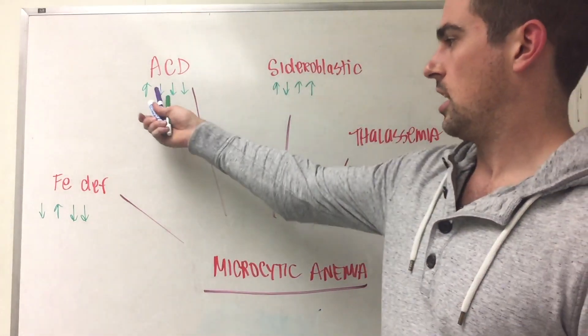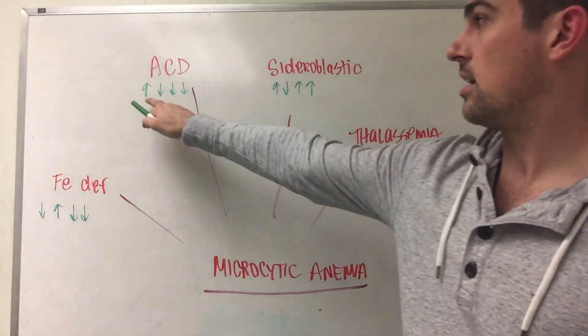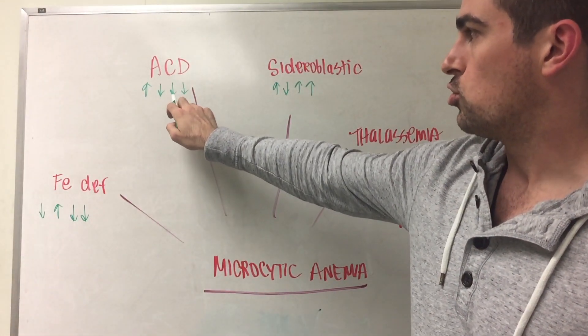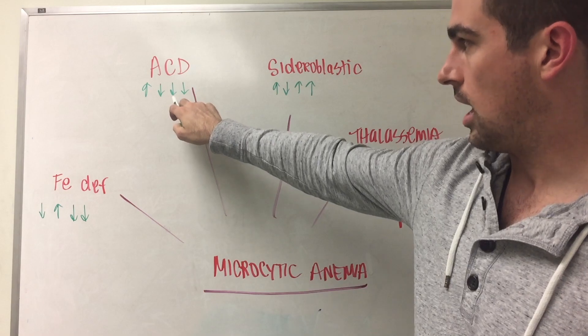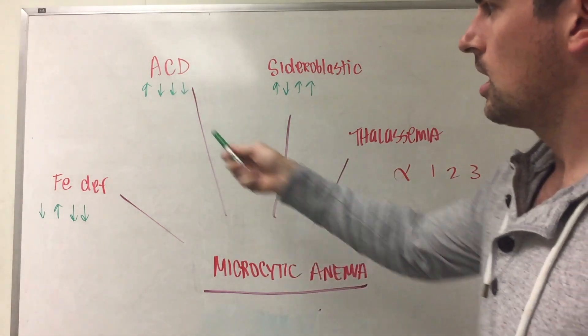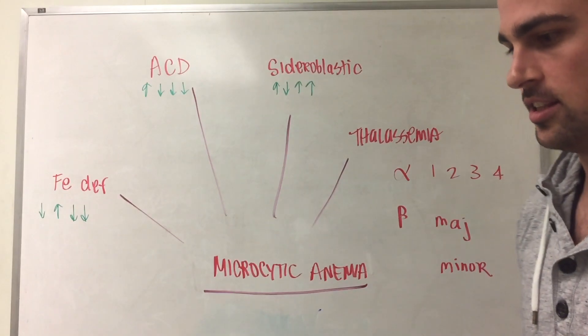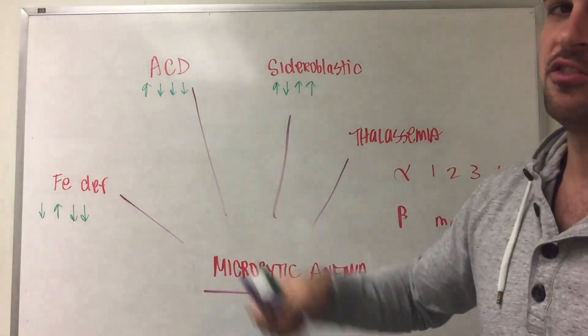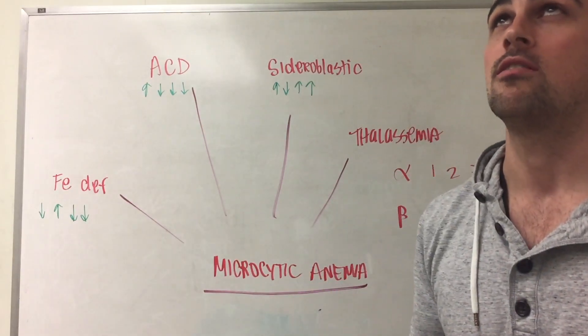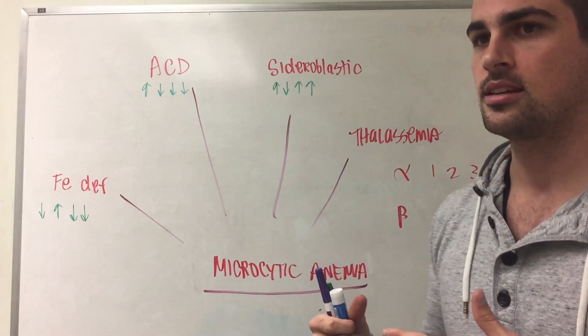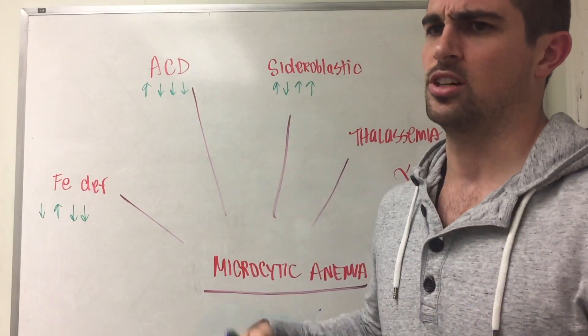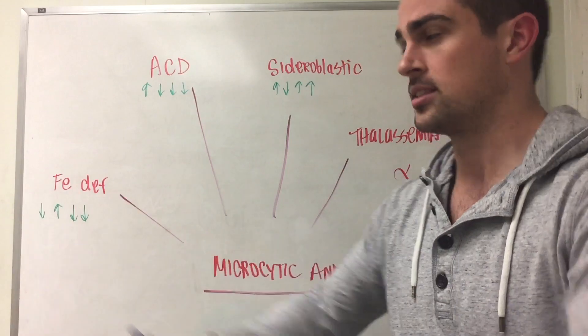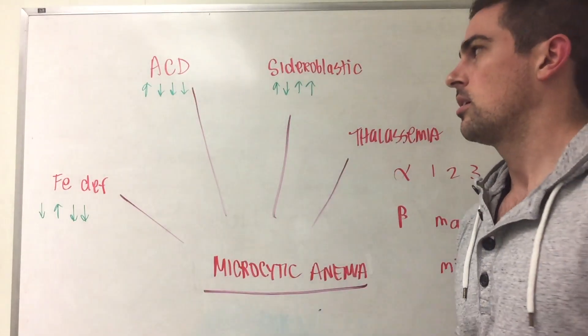Anemia of chronic disease. Once again we have increased ferritin but then dropping everything else: dropping TIBC, dropping serum iron, and dropping percent saturation. The reason why you have increased ferritin is when you are in a diseased state, and this will be important if you want to link it to white blood cells, like Hodgkin's lymphoma, rheumatoid arthritis, or you've been in the hospital for a long time battling infection.